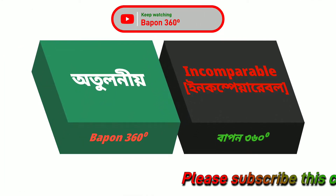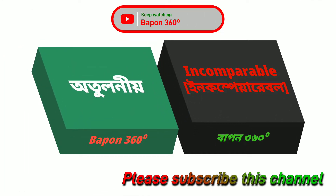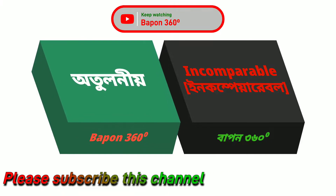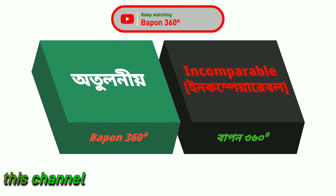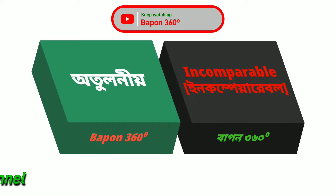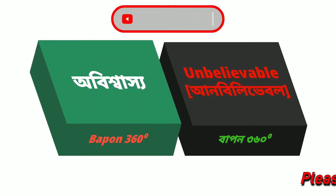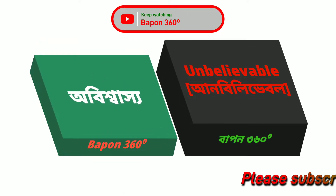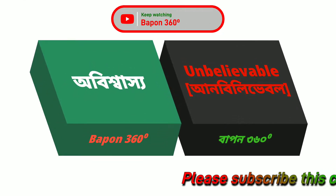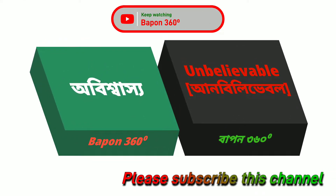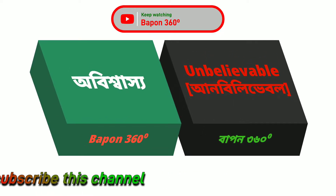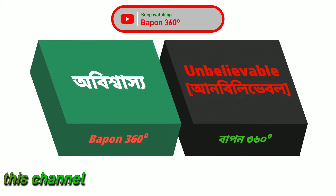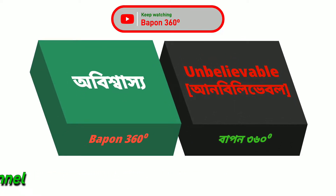Athulonio — incomparable. Incomparable, arthat athulonio. Abishasho — unbelievable, arthat abishasho.